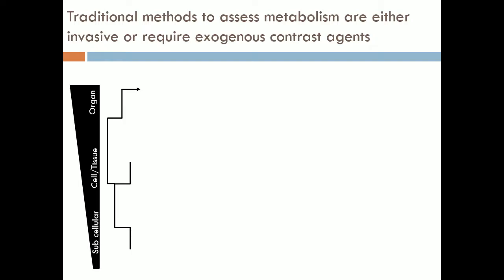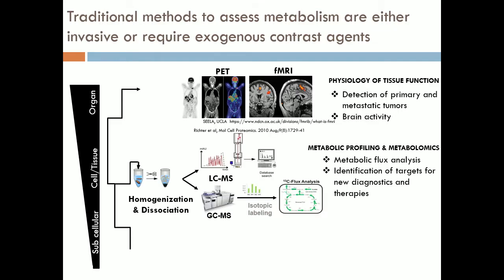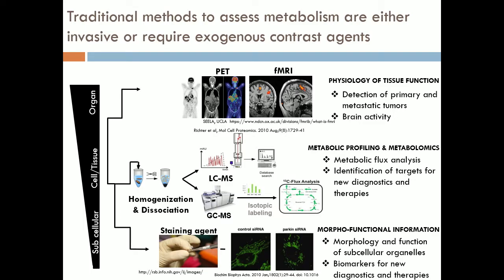We have a wide range of tools to assess cellular metabolism. PET and fMRI are mainstays of the clinic to assess brain function and detect tumors based on metabolic changes. In the lab, we use techniques such as carbon labeling and mass spec and a whole range of biochemical assays to assess metabolism, fueling this recent explosion in metabolomics. There's also great interest in developing probes to assess mitochondrial function and morphology, ideally in live cells.